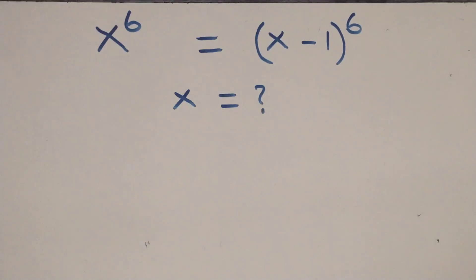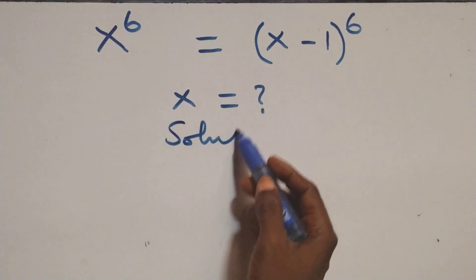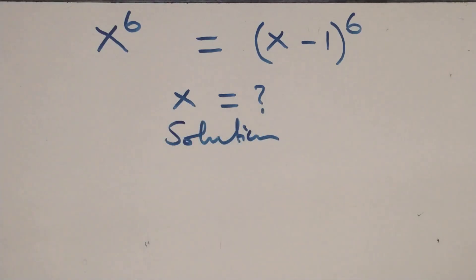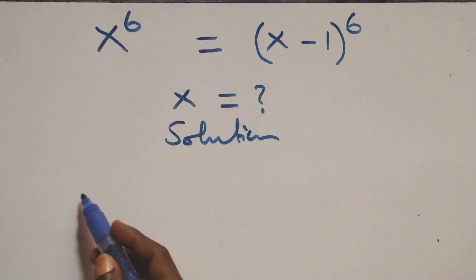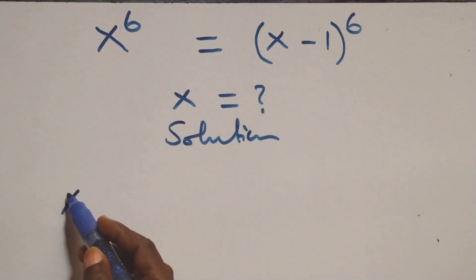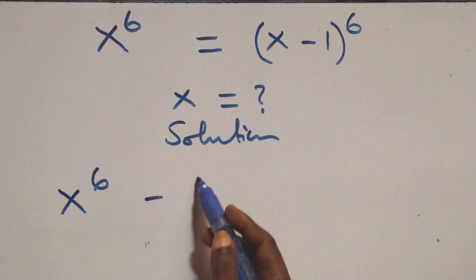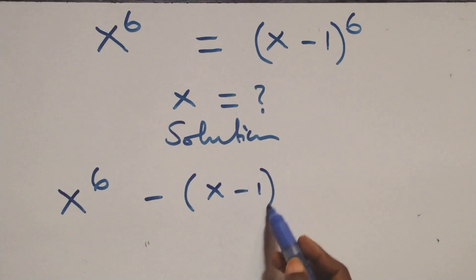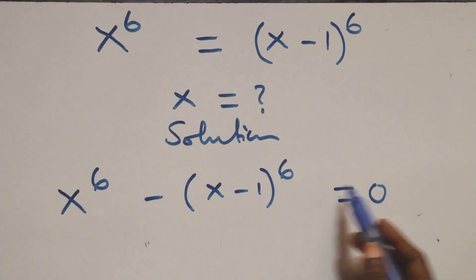Hello, you are welcome. How to solve this nice exponential equation. We take the right-hand side to the left-hand side: we have x raised to power 6 minus (x minus 1) raised to power 6, then equals to 0.